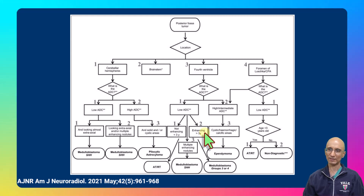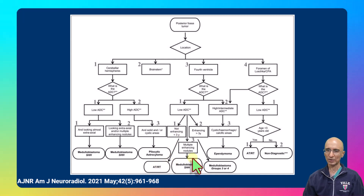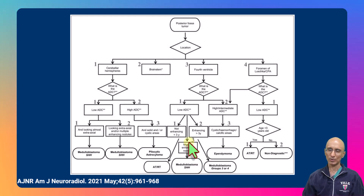We are dealing with a mass likely arising from the fourth ventricle. The lesion demonstrates low ADC signal and the child is less than three years old. So the most likely diagnosis is ATRT. Another possibility could be medulloblastoma, particularly the sonic hedgehog type. But based on the patient's age, I would strongly favor ATRT.